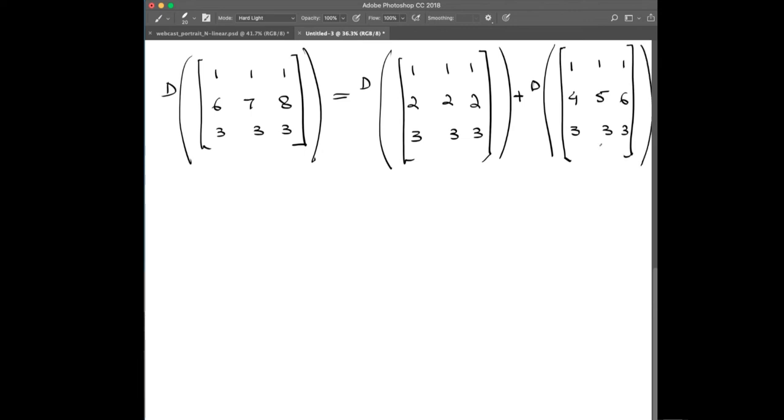We're going to simply check whether the trace of the matrix on the left side equals the trace on the right side. And if it does, then this function, which is the trace, is an n-linear function. On the left side, we sum up the diagonals and we get 11. Whereas on the right side, we obtain the trace of each component matrix.